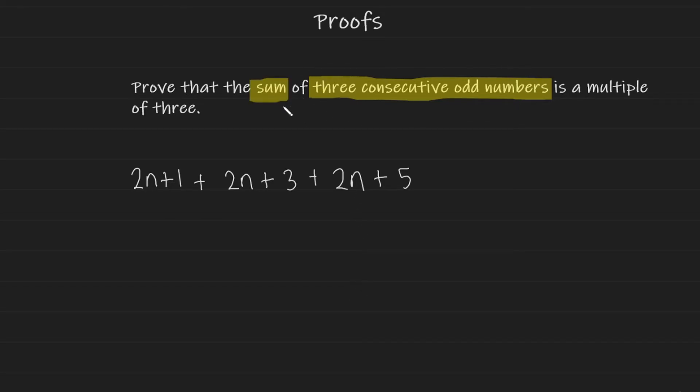Now, I'm then going to sum them, which means add them together. And it wants me to prove that this situation here is a multiple of 3. Well, is this a multiple of 3? Let me simplify it and see what we're dealing with. So 2n plus 2n plus 2n is 6n. Plus 1 plus 3 plus 5 is plus 9.